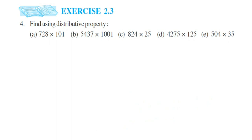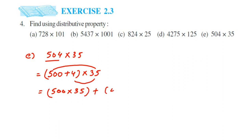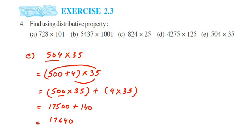This is problem E. We have 504 multiplied by 35. You can write 35 as 30 plus 5, or you can split 504. Splitting 504 gives 500 plus 4, multiplied by 35. So: 500 multiplied by 35 plus 4 multiplied by 35. For 500 into 35: 35 into 5 is 175, so with two zeros that is 17500. Then 35 into 4 is 140. Adding these two: 17500 plus 140 equals 17640.